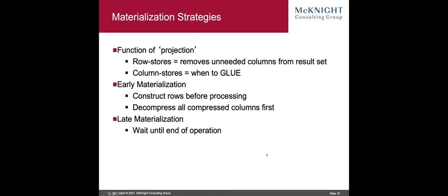Eventually, a database has to bring everything together and show you the results — that's called projection. In row stores, it removes unneeded columns from the result set but materializes things early because rows are already fully materialized. What you don't want is a column store doing early materialization with a row optimizer — taking the columns, simulating a row, and throwing it into the row optimizer. Most databases avoid that, but some still have pieces of it left, which is suboptimal.